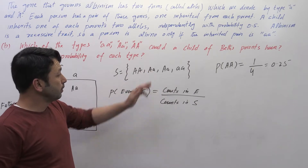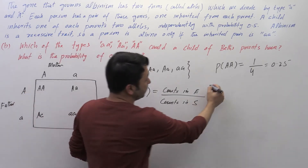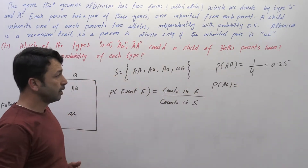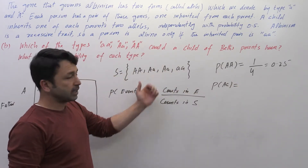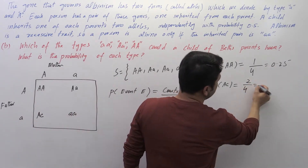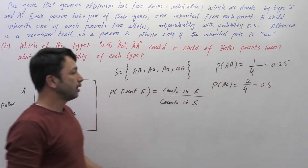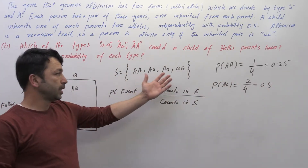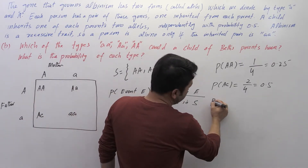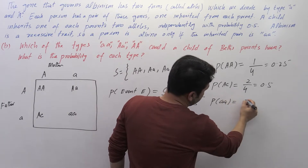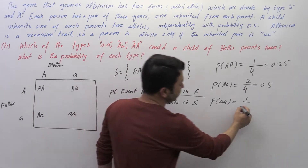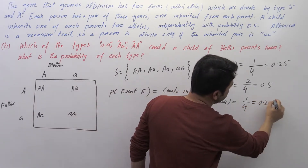For the second type, capital 'A' and small 'a', we have two sample points in the sample space, so its probability is 2 divided by 4, which equals 0.5. For the last type, both small 'aa', there is just one sample point, so its probability is 1 divided by 4, which equals 0.25.